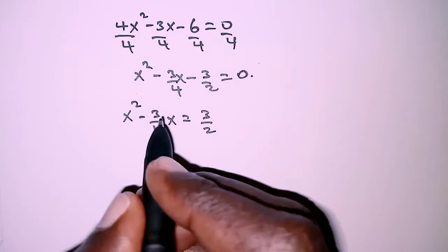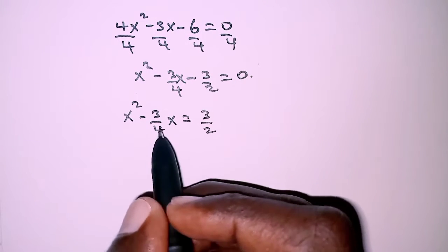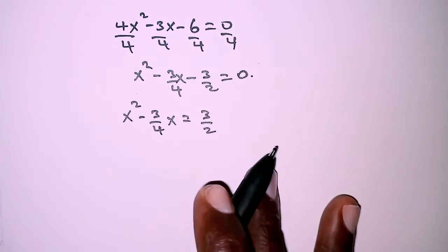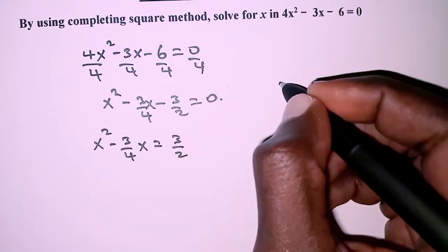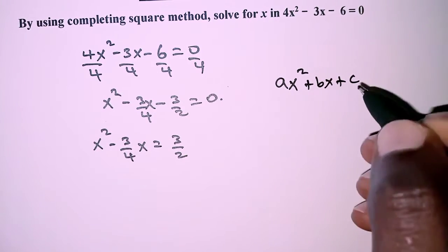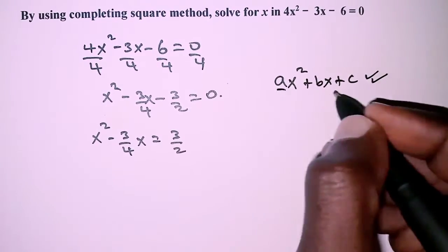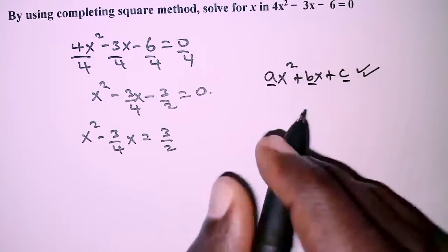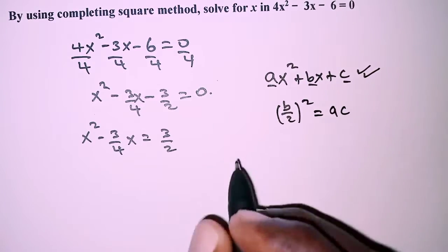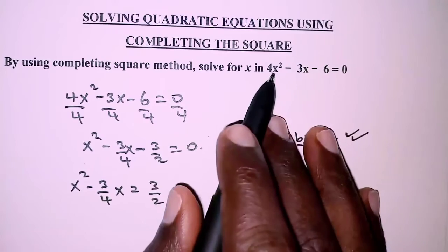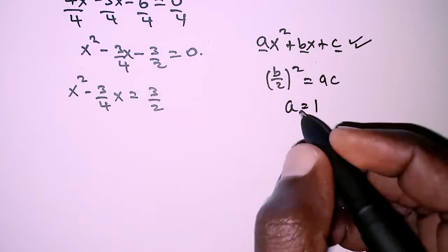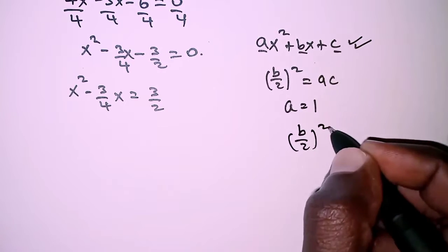On the left hand side, we are going to complete the square — that is, add the missing term so that the expression is a perfect square. We know that given a quadratic expression in the form ax squared plus bx plus c, if the expression is a perfect square, then the constants are related as b over 2 squared equals ac. Since we made the coefficient of x squared unity, a equals 1, so we have b over 2 squared equals c.